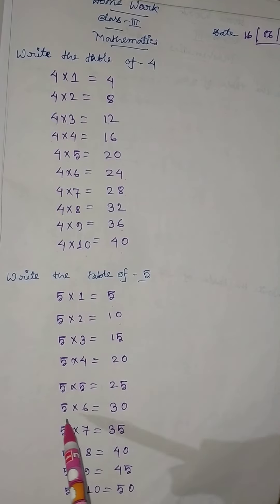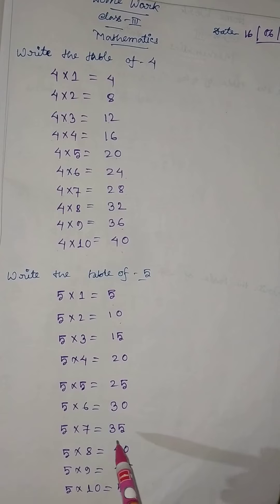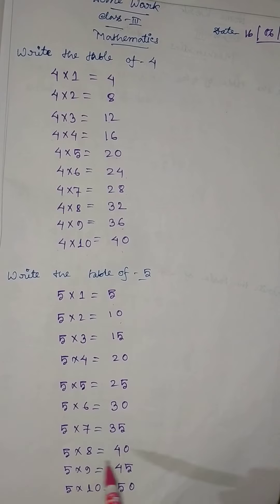5 into 5 equal to 25, 5 into 6 equal to 30, 5 into 7 equal to 35, 5 into 8 equal to 40.